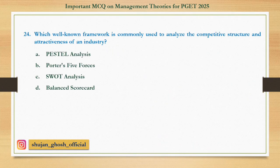Question 24: Which well-known framework is commonly used to analyze the competitive structure and attractiveness of an industry? Option A: PEST analysis. B: Porter's Five Forces analysis. C: SWOT analysis. D: Balanced scorecard. Answer is Porter's Five Forces analysis.